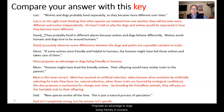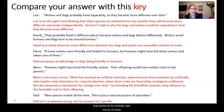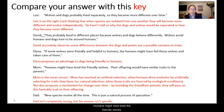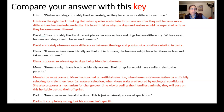Elena proposes an advantage to dogs being friendly to humans — this is really key. This was a trait that some of the wolves had, not all of them. Mom says that humans might have bred the friendly wolves. According to the key, Mom is the most correct. Mom has touched on artificial selection, when humans drive evolution by artificially selecting for traits they favor — she has proposed a mechanism.